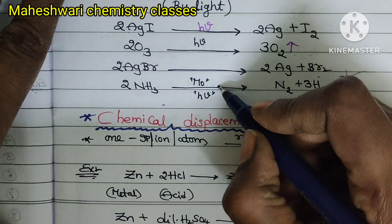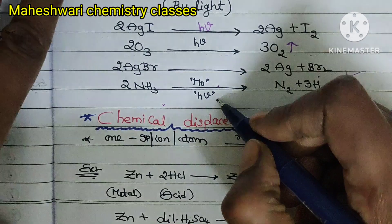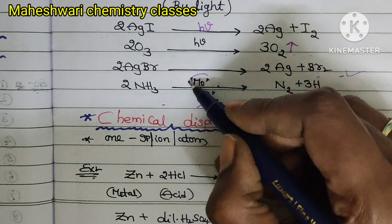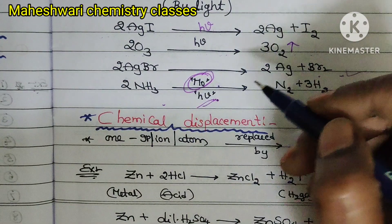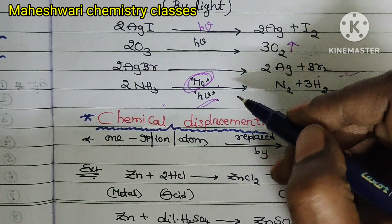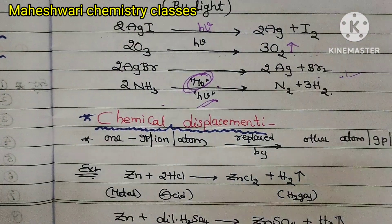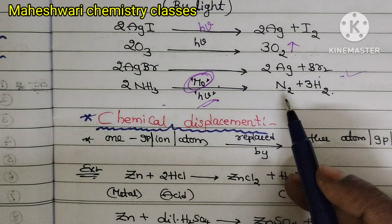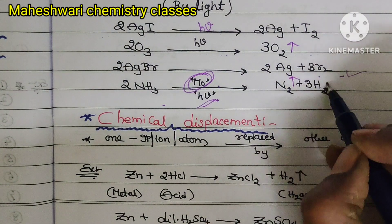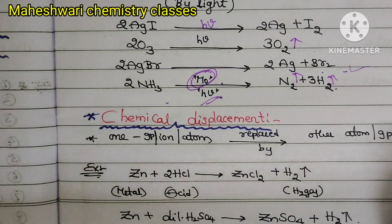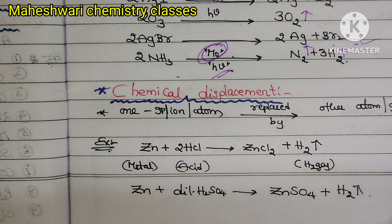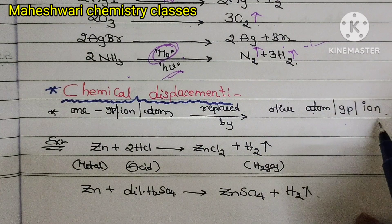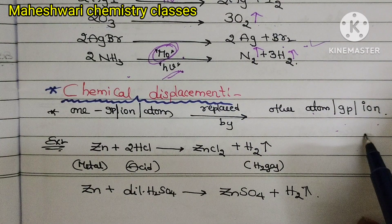Next, ammonia undergoes photodecomposition with molybdenum and photochemical energy. Photo means light energy, and molybdenum works as a promoter — like a catalyst. It converts ammonia into nitrogen gas and hydrogen gas. Next, chemical displacement: one group, ion, or atom is replaced by another atom, group, or ion.